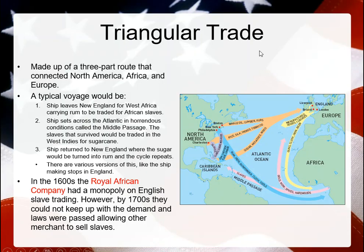Triangular trade — most people know it with Europe, Africa, and then the Americas. This became a really popular trade network for the 1600s, 1700s, even 1800s to a degree. This is typically how a voyage would go: ships would leave New England for West Africa, carrying rum to be traded for African slaves.